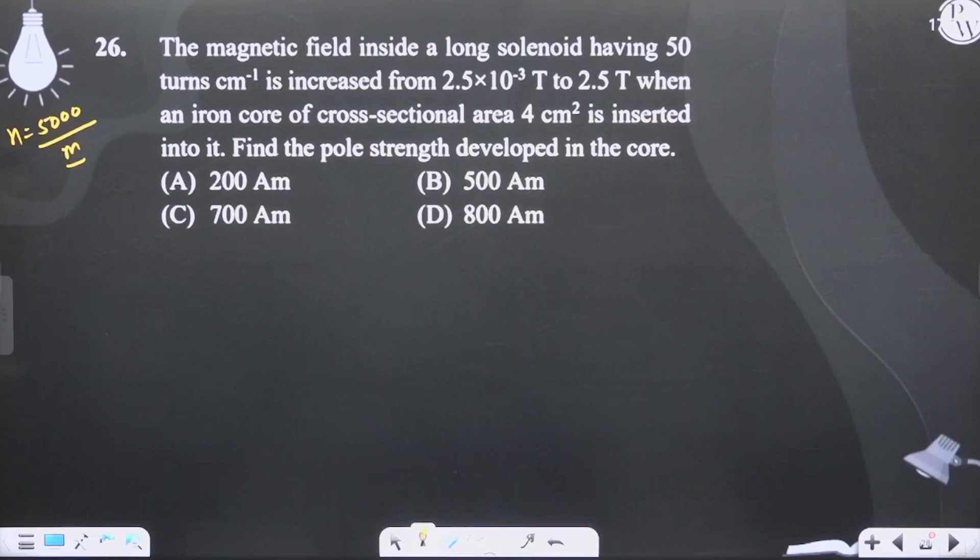Let's find the pole strength. Now first of all, we have to find the magnetization vector here.